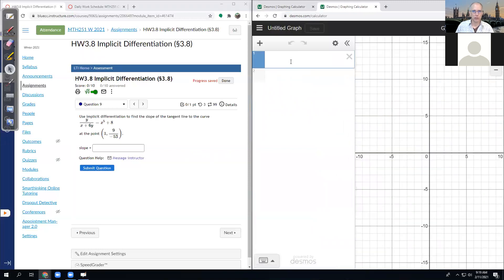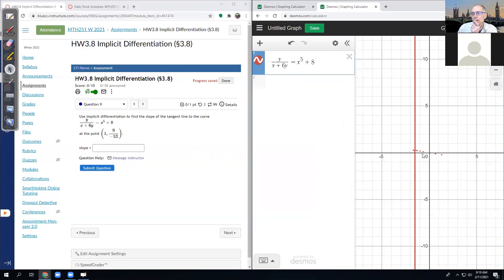Desmos can handle this one. Y divided by X plus 6Y equals X raised to the fifth plus 8. Desmos is struggling. Look at that.